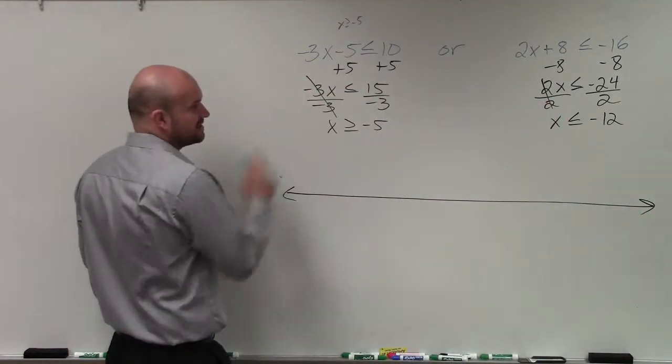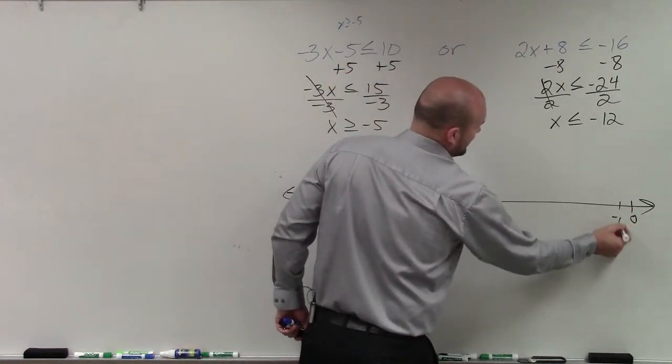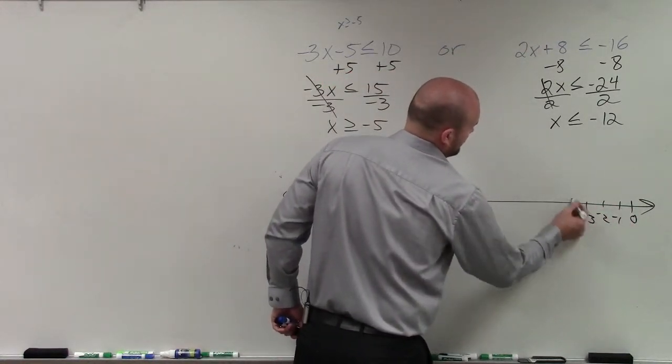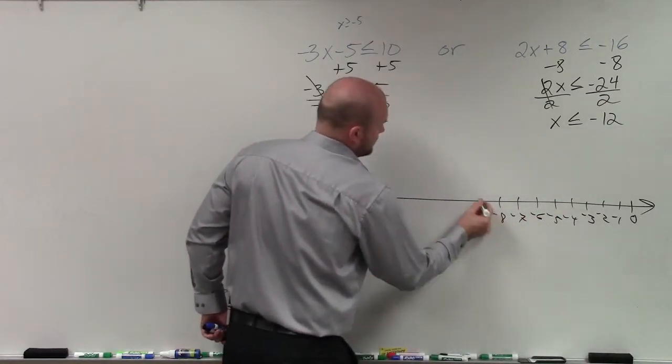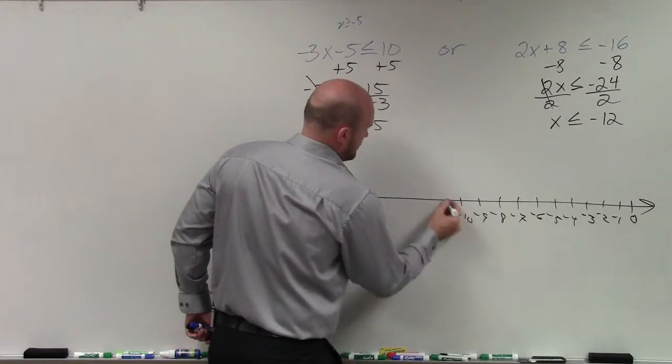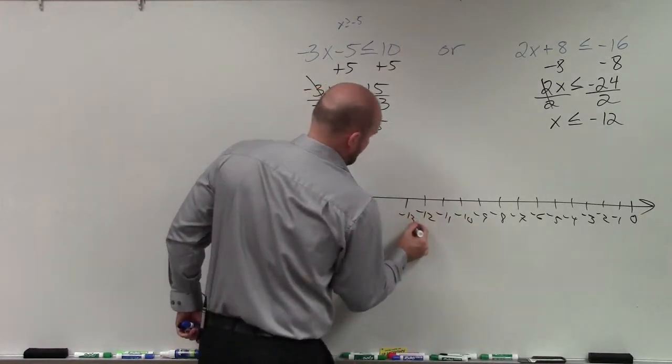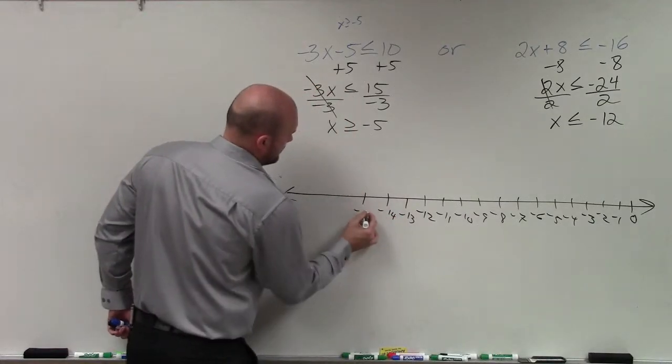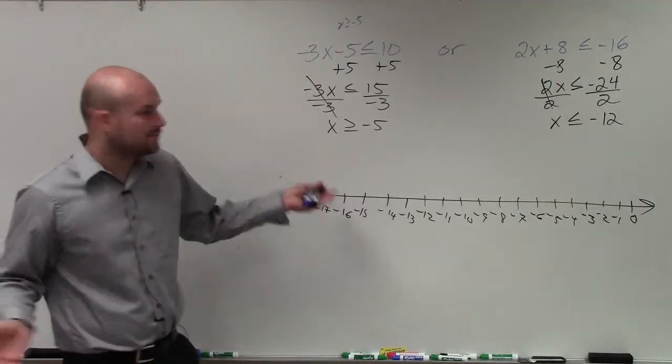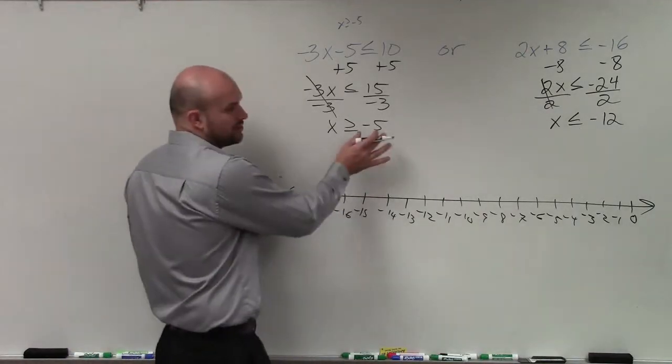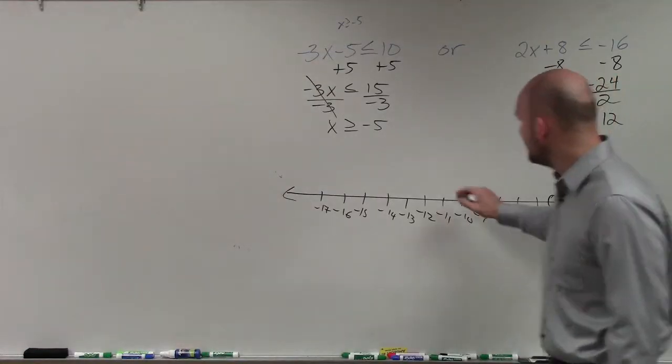Now, we need to create a number line that's going to contain negative 5 and negative 12. So I'll put 0 over here, negative 1, negative 2. All right, so again, ladies and gentlemen, we're going to do what we know how to do. We're going to go to our two points and make dots there. So I have negative 5 and negative 12.